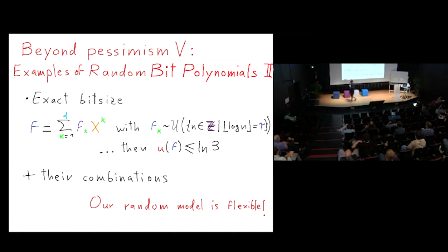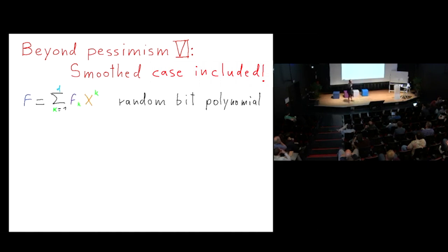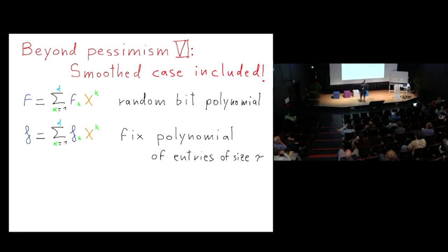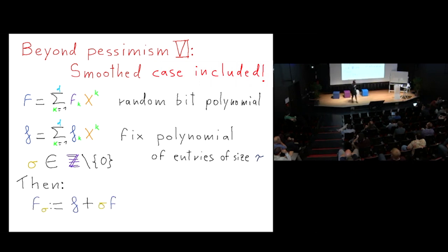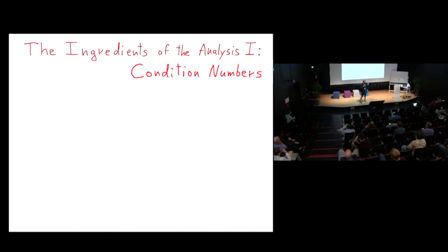The random model is flexible. It also includes the muted (perturbed) case: given a fixed polynomial of a certain bit size, we add random noise of size sigma, and this gives a random bit polynomial. We can still bound the uniformity, so our model includes perturbations of fixed polynomials by random polynomials of a certain magnitude.